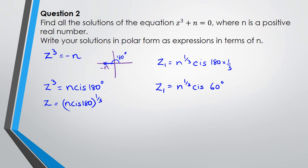Now, remember that we have three roots, so the differences between the roots is going to be 120 degrees, because 360 divided by 3 is 120.